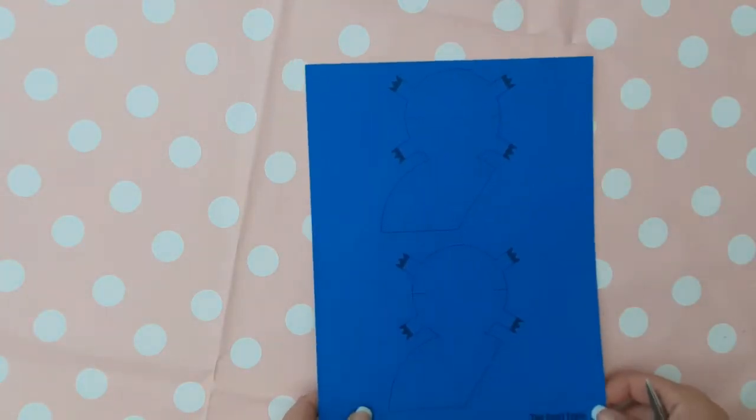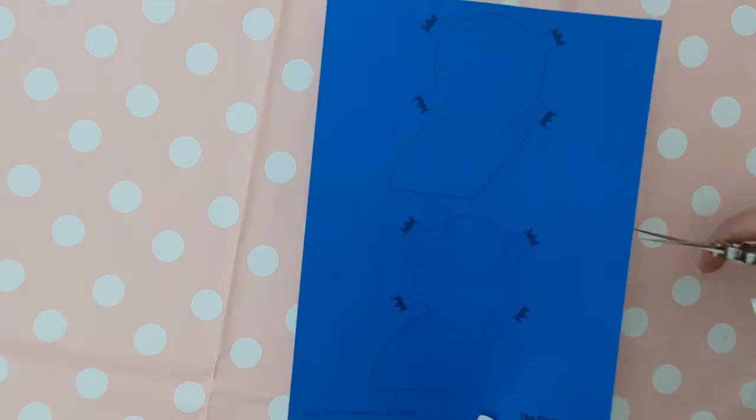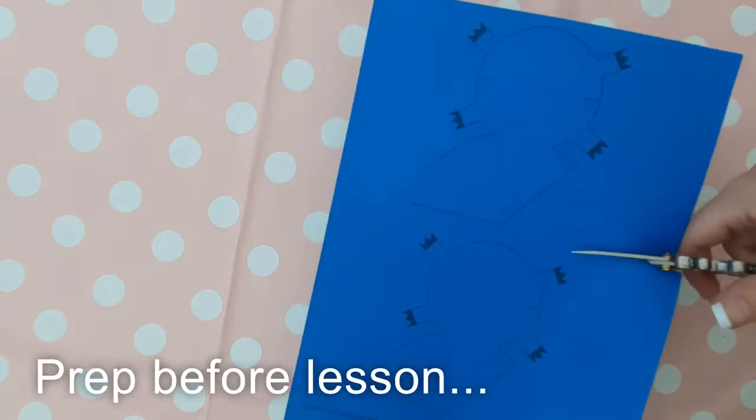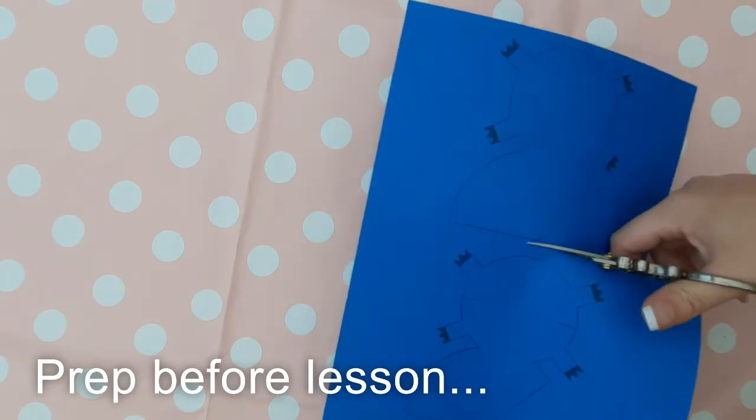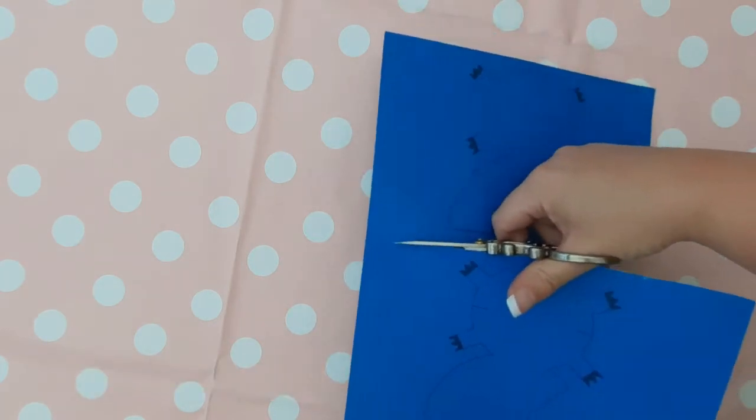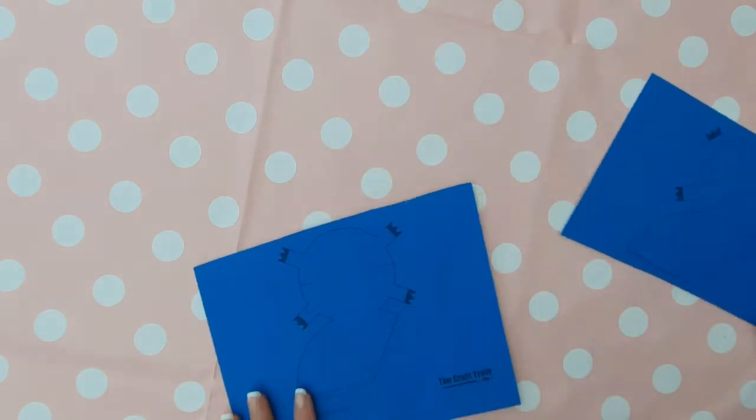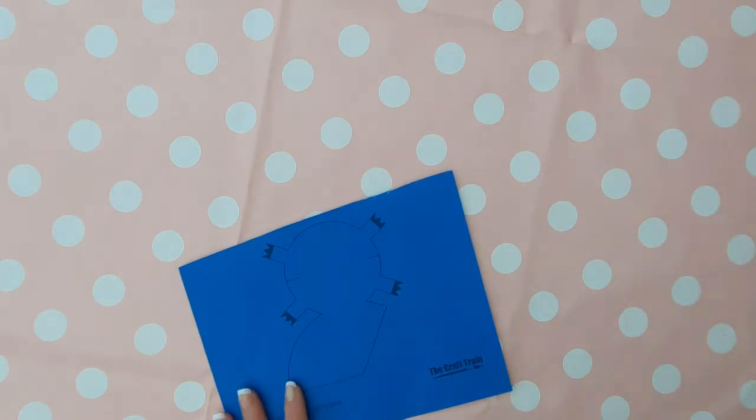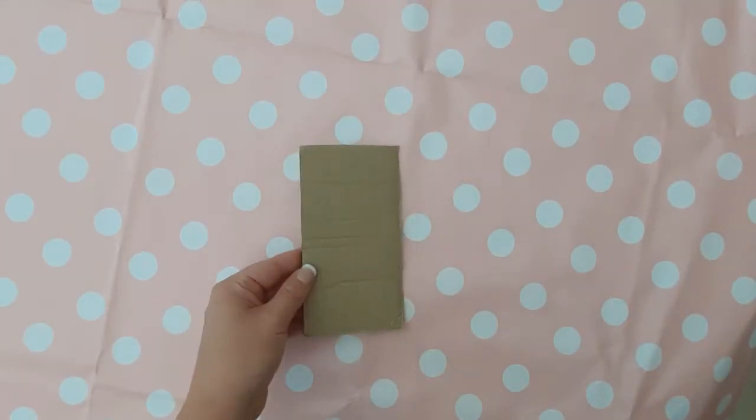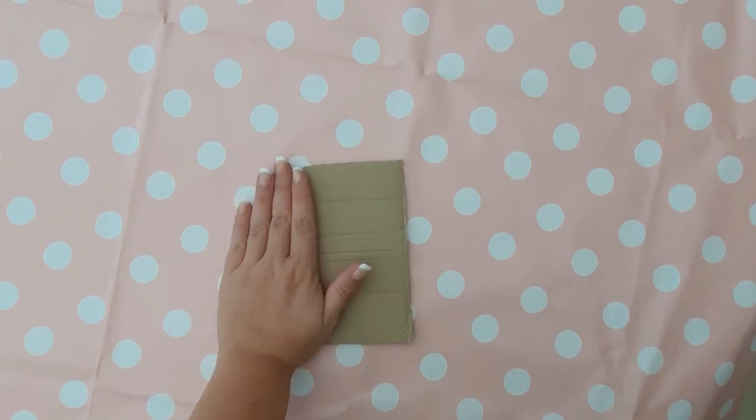There is very little prep for this lesson. All you need to do is print off the templates in the description box below onto colored card, and then either cut the page in half so you've got just one hedgehog on each piece of paper, or use a guillotine, which I didn't have at home.